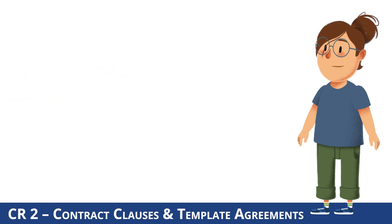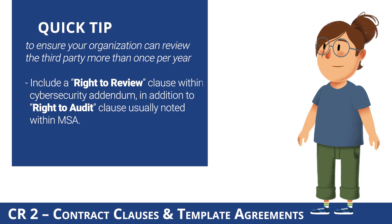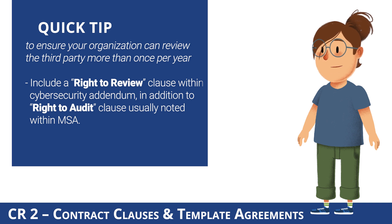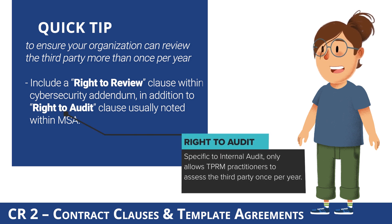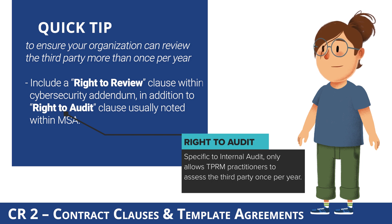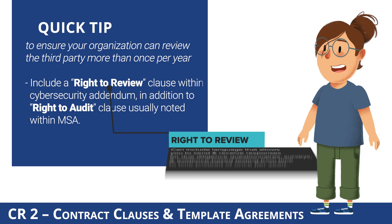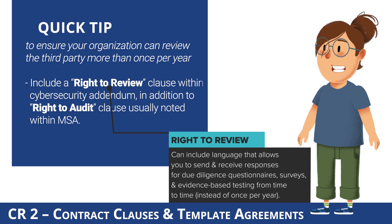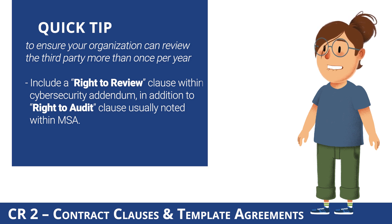A tip for ensuring your organization can review the third party on a regular cadence more than once a year is to include a right to review clause within the cybersecurity addendum, in addition to the right to audit clause usually noted within the MSA. The right to audit clause is usually specific to internal audit and only allows TPRM practitioners to assess the third party once per year. A right to review clause can include language that allows you to send and receive responses for due diligence questionnaires, surveys, and evidence-based testing from time to time, instead of once per year.